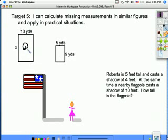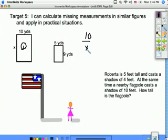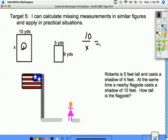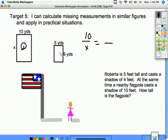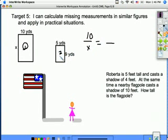We will take our first figure and it will be our first ratio of our proportion. We'll put 10 over x. Now to set up my second half of my proportion or my second ratio, it's going to come from my second figure.